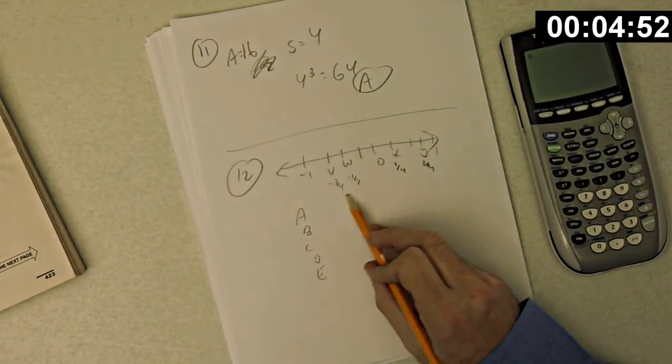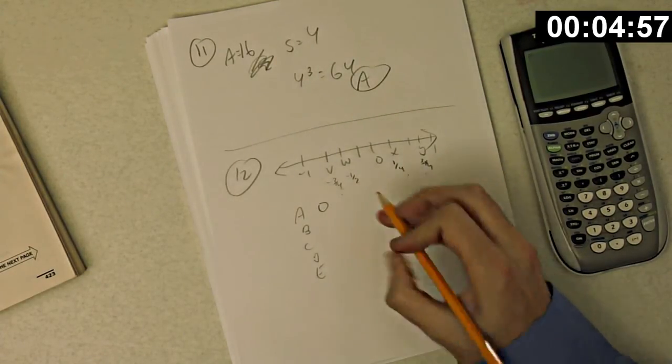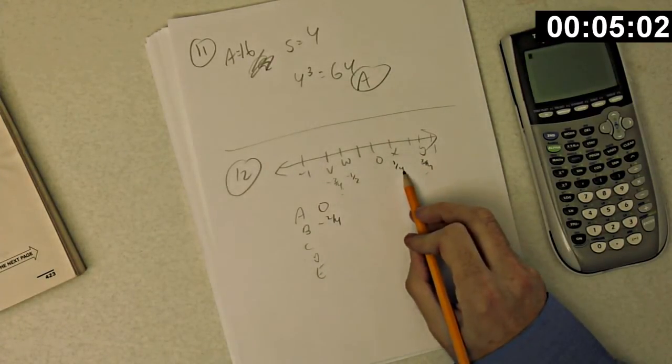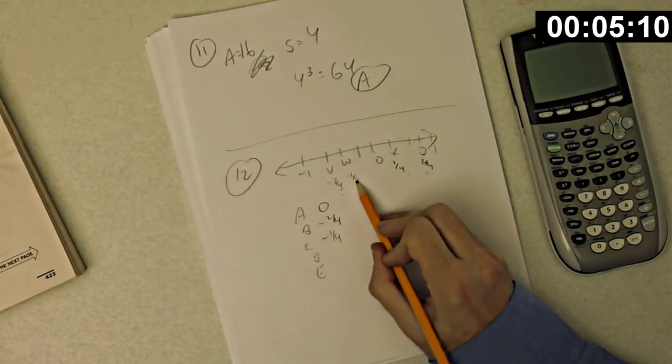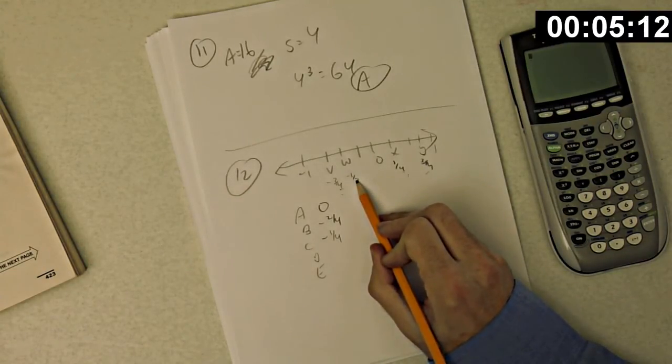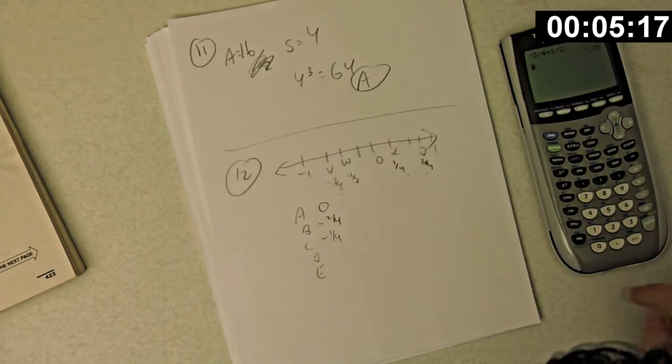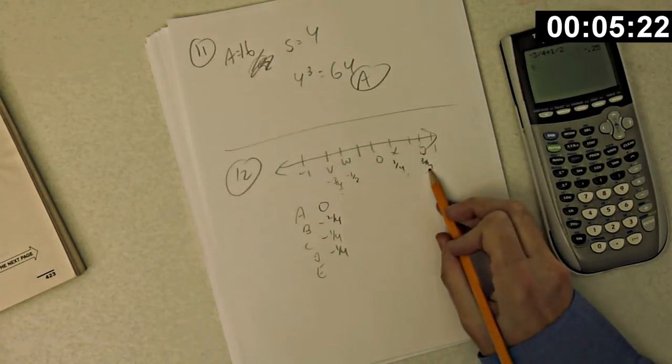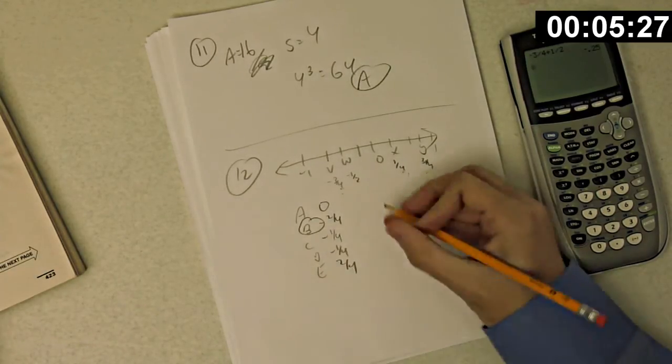V plus Y. So that's negative 3/4 plus 3/4. That's 0. V plus X. Negative 3/4 and 1/4 is negative 2/4. I'll leave it as 4ths for now. W plus X. Negative 1 1/2 plus 1/4. That's negative 1 1/4. D, V minus W. Negative 3/4 plus 1 1/2 is negative 1 1/2. And E, Y minus X. That's 3/4 minus 1/4 is 2/4. We want the least value. That would be negative 2/4. Choice B. That was a tough one.